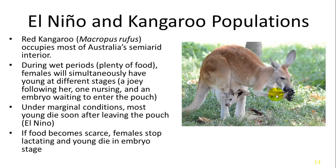These weather patterns affect the abundance of nutrients and the ability of photosynthesis to take place in both marine and terrestrial environments, and they have cascade effects up and down trophic levels.